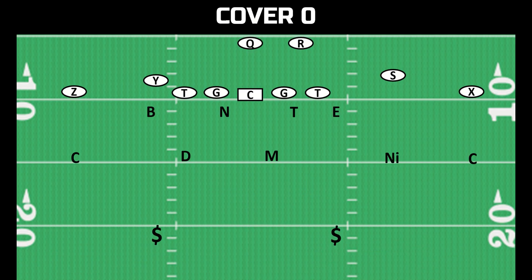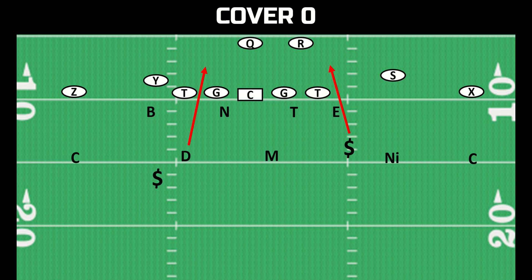And then if you want to get really aggressive on defense, you play cover zero. Cover zero is when you have zero deep safeties, so you are blitzing two defenders plus your four defensive linemen. You can either play man or zone behind it, but specifically in cover zero you are playing man.